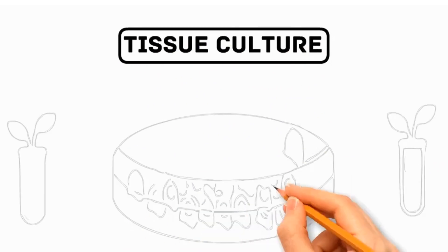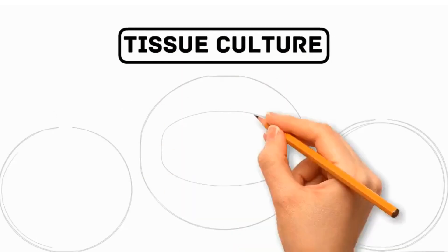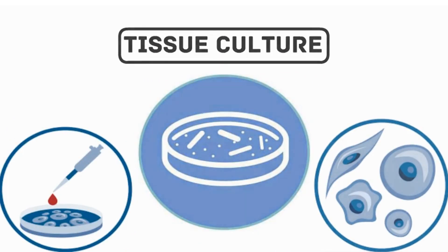Number four: Tissue Culture. It is a more advanced propagation method that involves taking small pieces of tissue from plant and growing them in a sterile laboratory environment under controlled conditions.